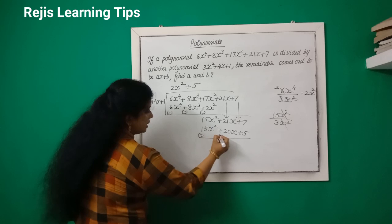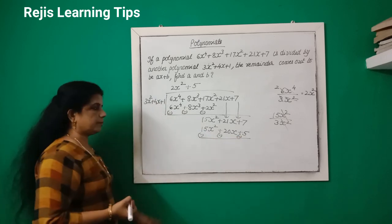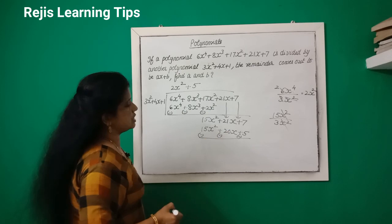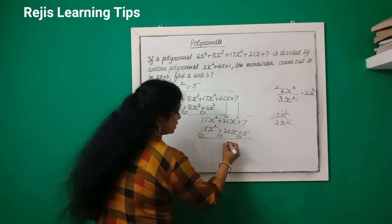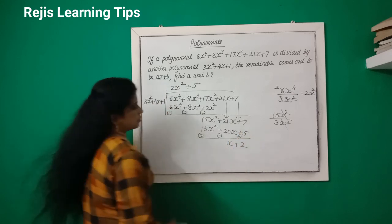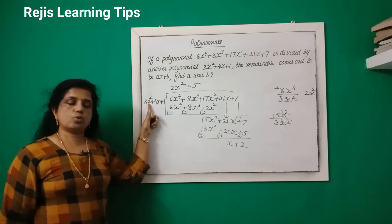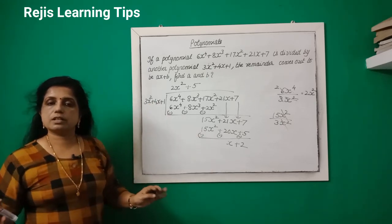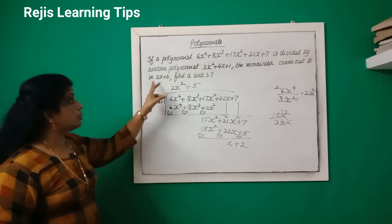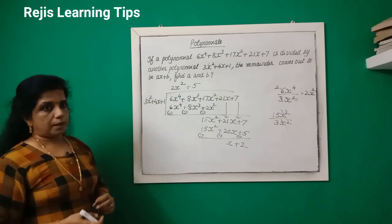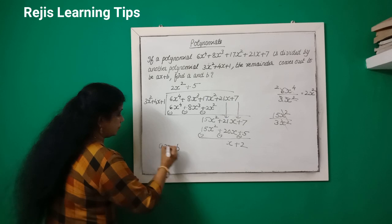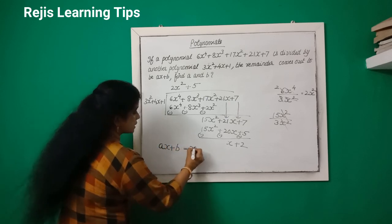After subtracting, we get the remainder. Since the degree of the remaining expression is less than the divisor, division stops. The remainder is x + 2, which is in the form ax + b.